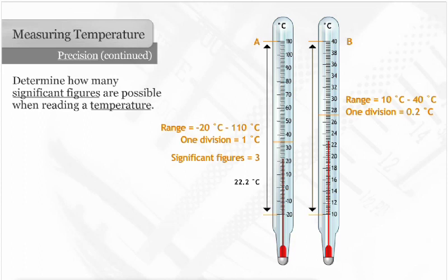The temperature of thermometer B is 22.27 degrees Celsius. 22.27 includes three known numbers and one uncertain number.